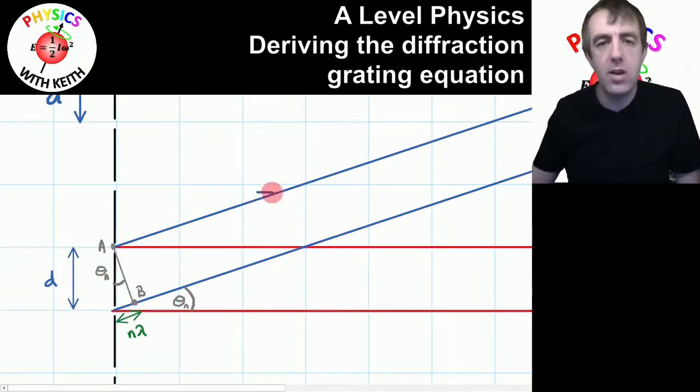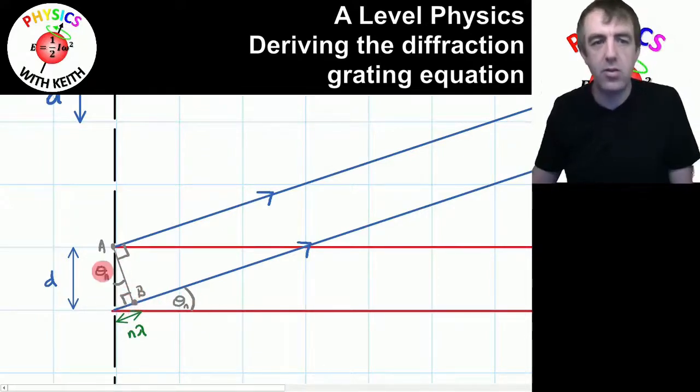And the further away the screen is, the more parallel these two rays become. And if those rays are parallel, then this is a right angle, but also this is a right angle. So we've got a right angle triangle down here.